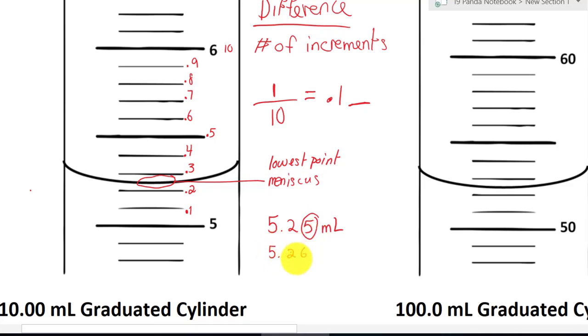So it could be five point two six, five point two seven. All these numbers are estimated. So your last digit will always be estimated.